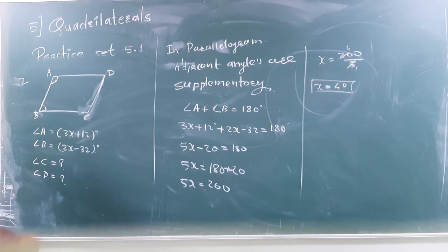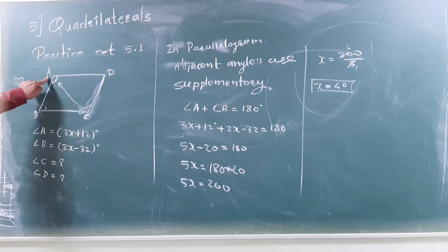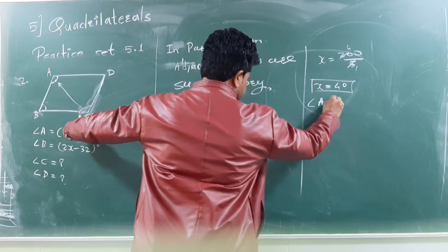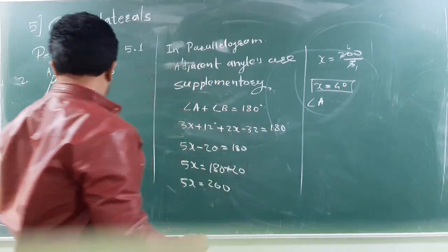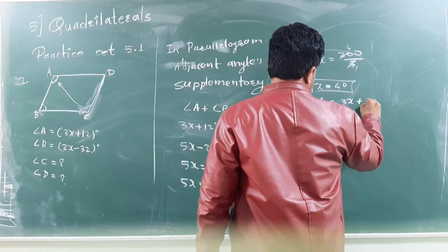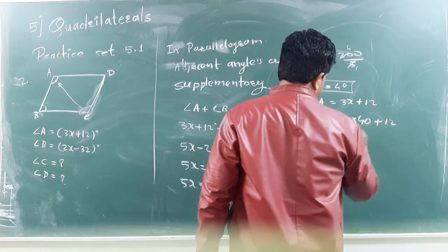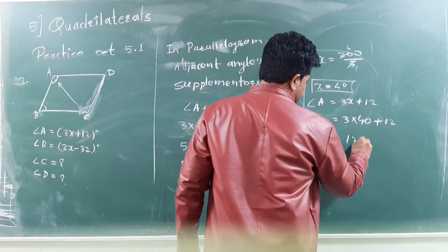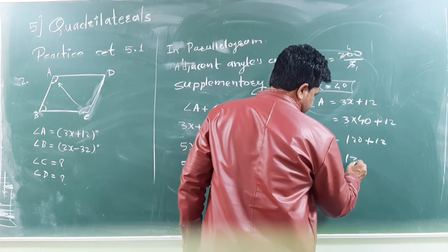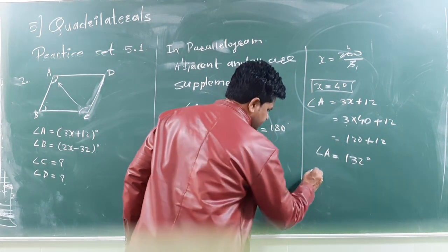Now, we have to find here C. But, C is opposite to A. That is why we have to find here A. And, A will be equal to angle C. So, what is A here? The A is 3X plus 12. This is 3 into X. What is X? 40. Plus 12. So, this is 120 plus 12. And, it is 132.